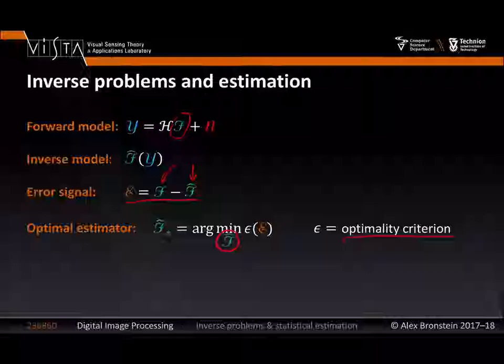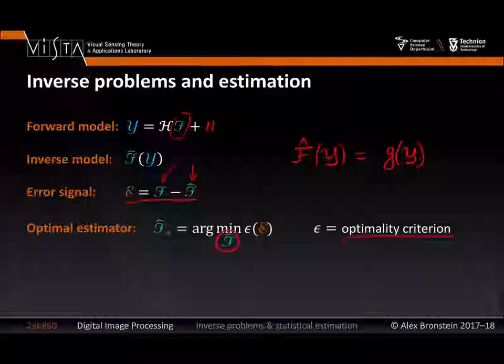An estimator f-hat of y is a stochastic quantity because y is stochastic, but it is obtained by some deterministic transformation g of y. So g is just a function — a deterministic function that takes the measurement and gives the latent signal. When a stochastic input y is plugged in, we get a stochastic output, but the estimator itself is deterministic.